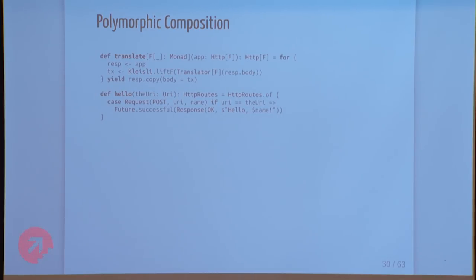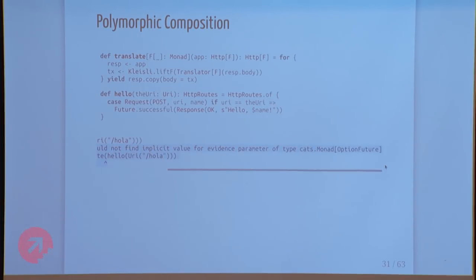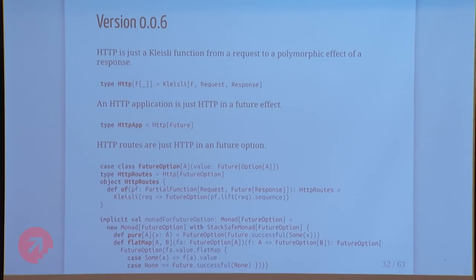We try to apply translate to make our Spanish routes but it still doesn't compile — it says we couldn't find an implicit value for Cats monad for Option Future. You can't define a monad for an Option Future because the Option is on the outside. Think about how you'd try to define flatMap for that — it's impossible, because you need to know what happens in the Future to know what kind of Option to return on the outside. The only two ways are blocking, which we've established is bad, or having a crystal ball.